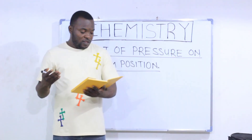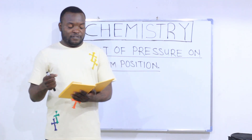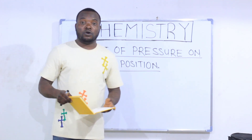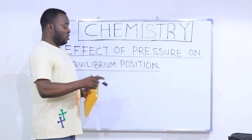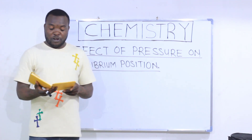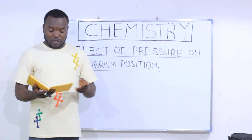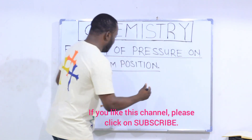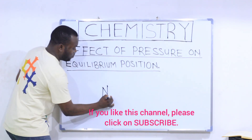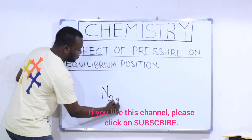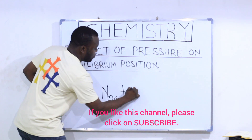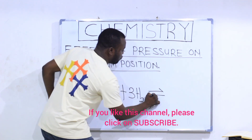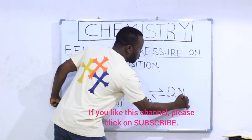Let's take this question. What is the effect of the following on the equilibrium position of the reaction below? Number one: increasing the pressure of the reaction. Number two: decreasing the pressure of the reaction. The reaction is: N₂ (nitrogen gas) plus three moles of H₂ (hydrogen gas) reversibly producing two moles of NH₃ (ammonia gas).